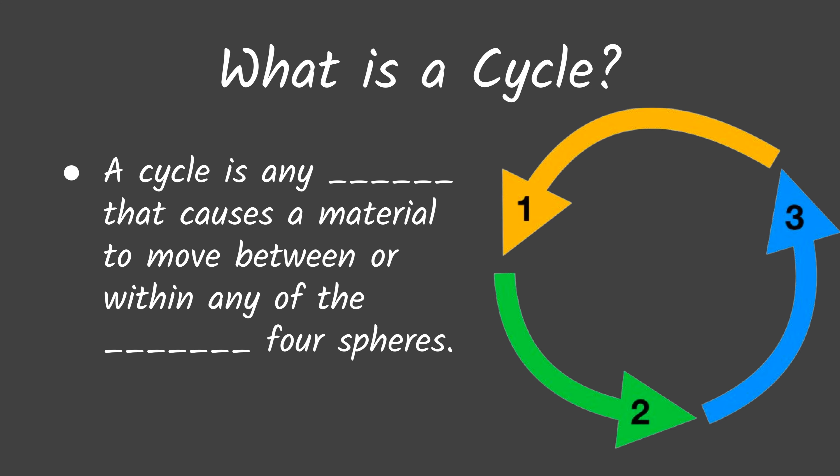A cycle is any process that causes material to move between or within any of the Earth's four spheres. So that material could be an element like carbon, it could be a molecule like water, it could be energy where it's not even a physical thing. We just track how that material or energy is moving between the four spheres of Earth: the hydrosphere, the geosphere, the atmosphere, and the biosphere.